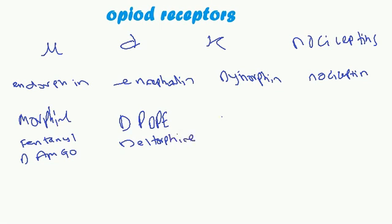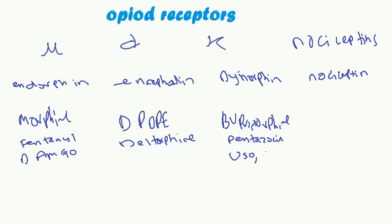For kappa, we have buprenorphine, pentazocine, and U-50488, among others. All of these receptors inhibit adenylyl cyclase.